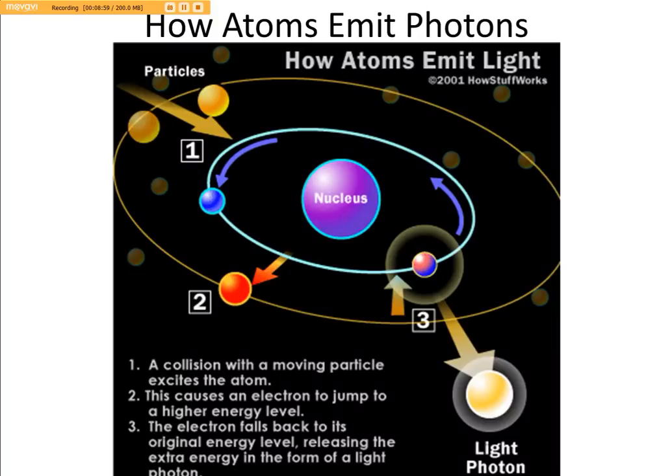All right, so how atoms emit photons. Well, there we go. Collision comes in with the particle, excites the atom, the atom gets excited, the electron bounces into the higher energy level. The electron's falling back and whoa girl, we got light. And that's what we see, and man, this light, it's just not light to us, it's a light that's beyond us.